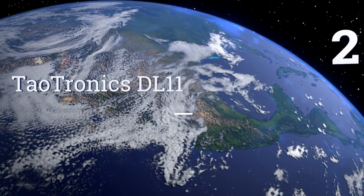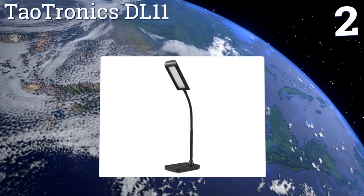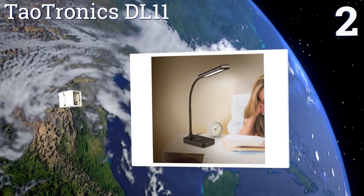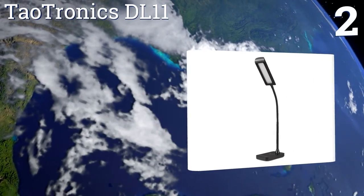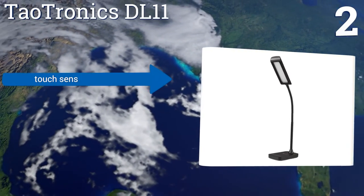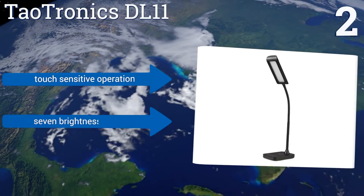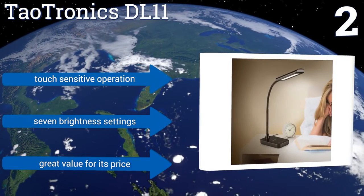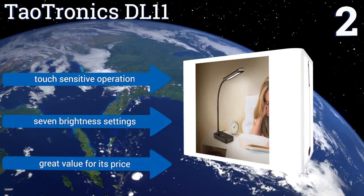At number 2, the Daw Tronics DL11 is one for the modern era, with its elegant and ergonomic design that's ideal for both home and office use. It projects a soft uniform light for an enjoyable reading or writing atmosphere just about anywhere. It offers a touch-sensitive operation, 7 brightness settings, and great value for its price.